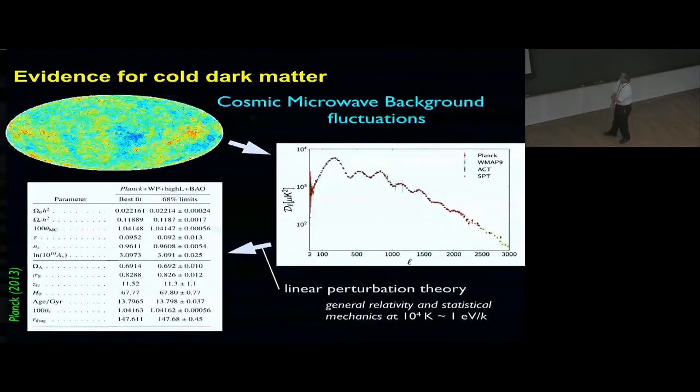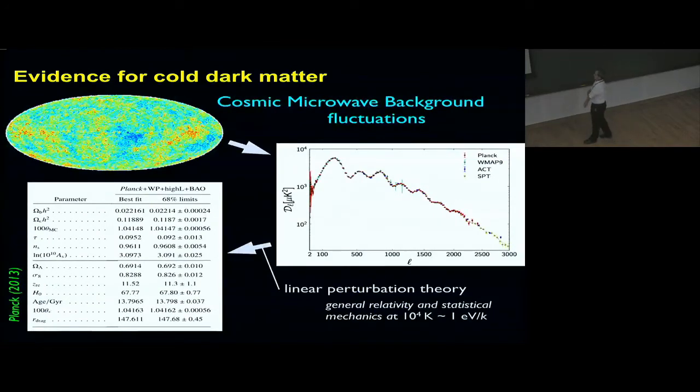If we look at the CMB scale, this is known physics. It's linear perturbation theory with general relativity linearized. Statistical mechanics at 10,000 Kelvin or one electron volt. We think we understand the physics in this regime very well, and one can fit the peaks, the structures in the CMB, with the cosmological model.